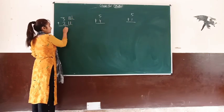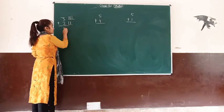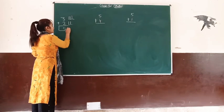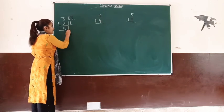Now we have the result. 3 plus 2 equals 5.